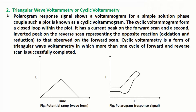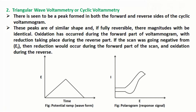The cyclic voltammogram forms a closed loop within the plot. It has a current peak on the forward scan and a second, inverted peak on the reverse scan, representing the opposite reaction — that is, oxidation and reduction — to that observed on the forward scan. Cyclic voltammetry is a form of triangular wave voltammetry in which more than one cycle of forward and reverse scan is successfully completed. There is a peak formed on both the forward and reverse sides of the cyclic voltammogram, and these peaks are of similar shape, and if fully reversible, their magnitudes would be identical.